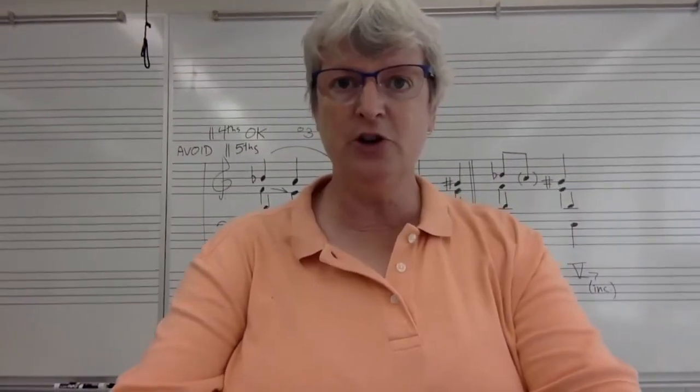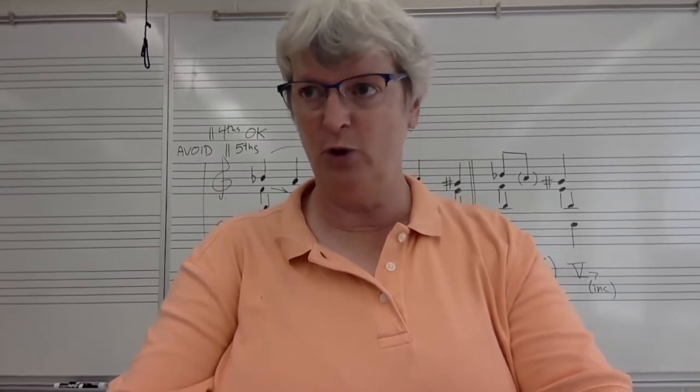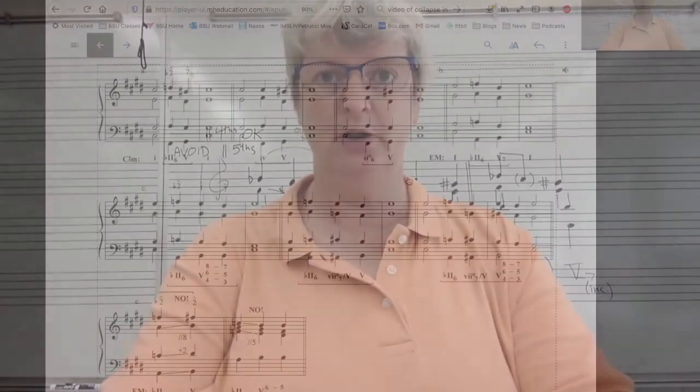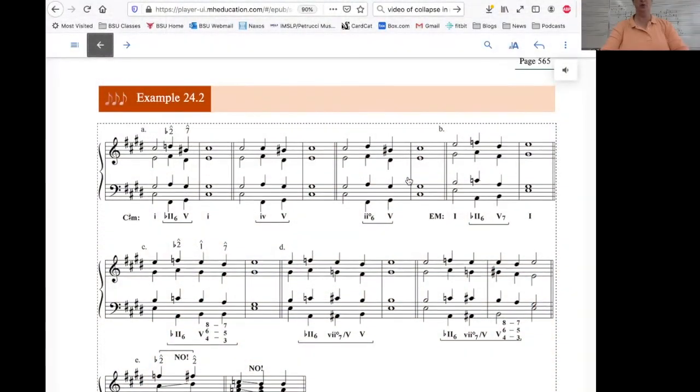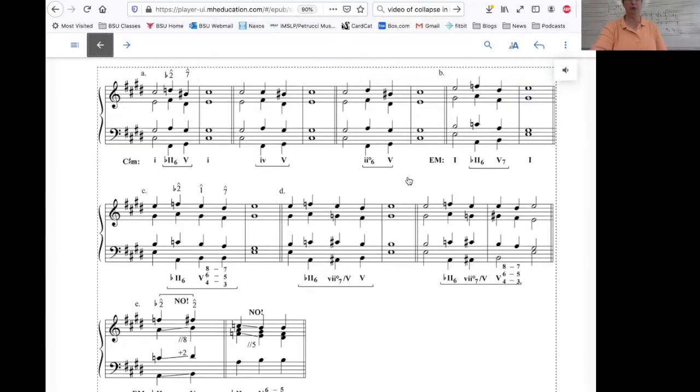I'd like to have you look in your textbooks at page 565, if you will. We're going to look at example 24.2. So this is example 24.2, and it's on page 565 of your textbook. First of all, the first example, example A, shows you in a different key. Now we're in the key of C-sharp minor. It shows you 1 going to flat 2-6, going to 5, going to 1.